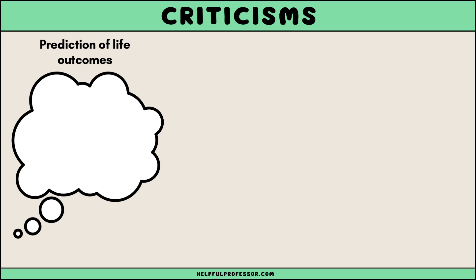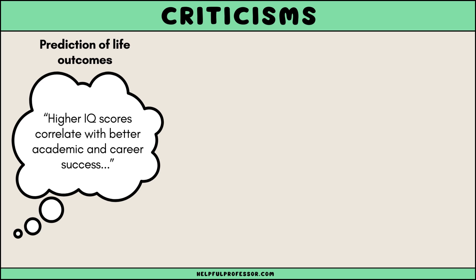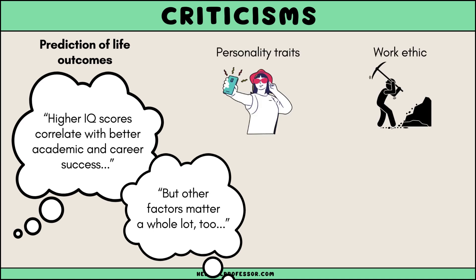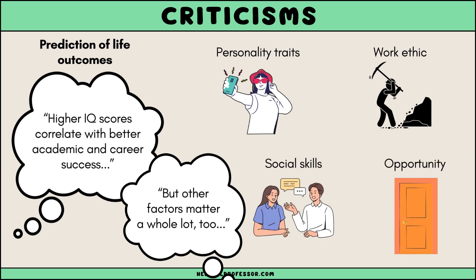The use of IQ scores to predict life outcomes is another area of controversy. While there is evidence to suggest that higher IQ scores correlate with better academic and career success, the relationship is not absolute. There are many instances where individuals with average or below-average IQ scores achieve high levels of success, and conversely, those with high IQ scores do not always reach high levels of achievement. This indicates that other factors such as personality traits, work ethic, social skills, and opportunities play critical roles in one's success.